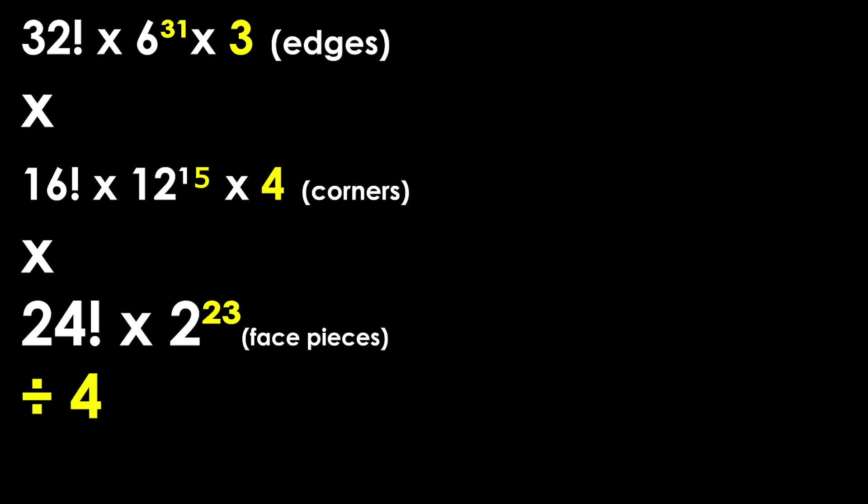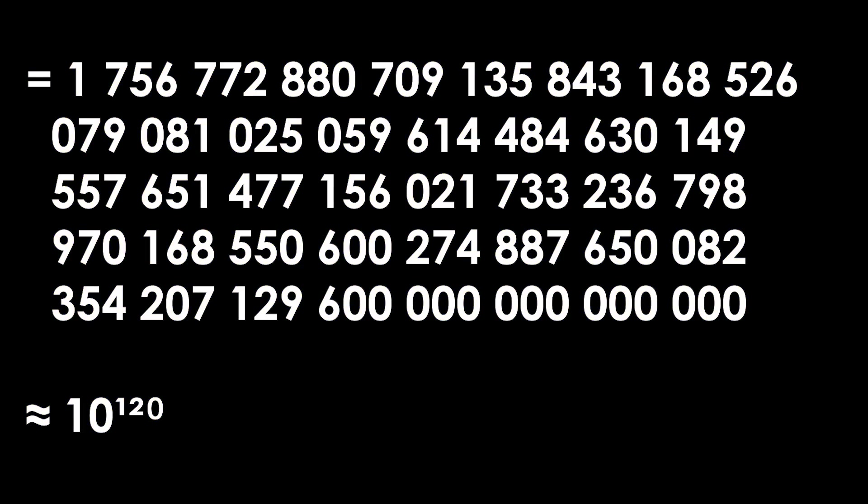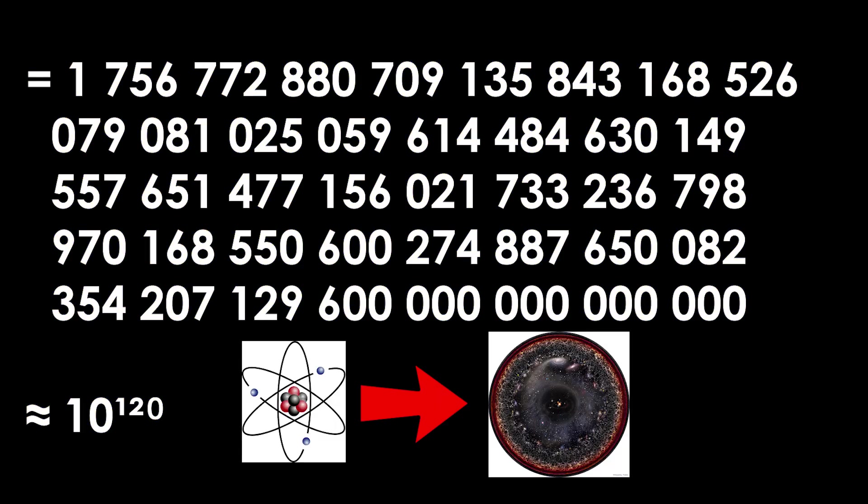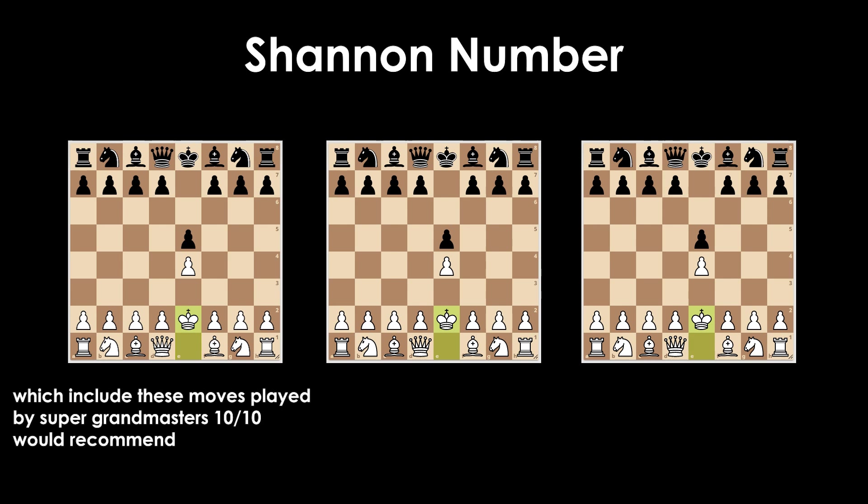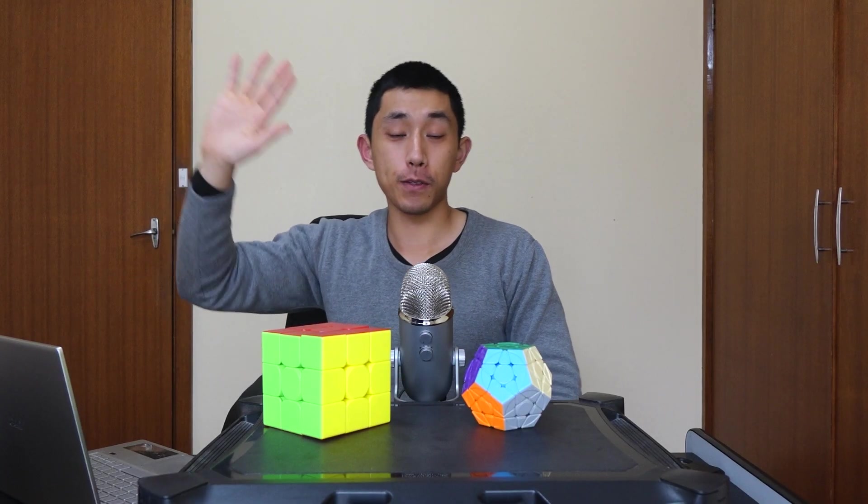With that all accounted for, you get this final answer, which is so big that the amount of atoms in the observable universe is only 10 to the power of 80. Actually, the only thing I could find that was somewhat comparable was something called Shannon's number, which is a very approximate lower bound estimate for the amount of possible chess games that can be played, which is 10 to the power of 120. Anyway, that's all. Thanks for watching and see you in the next video. Bye.